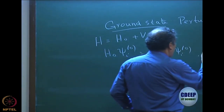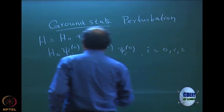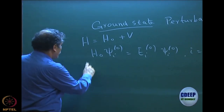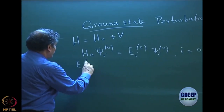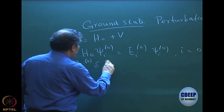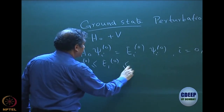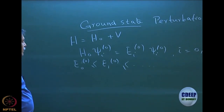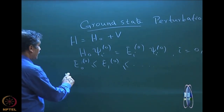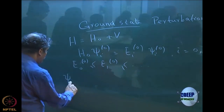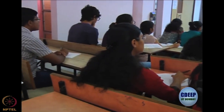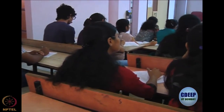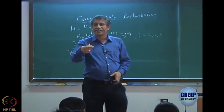So i is 0, 1, 2, 3, etc. E00 is the lowest energy, so I can write E00 less than or equal to E10, etc. This is an ordering. The correction to the ground state at first order — every time I write the superscript, remember, the superscript is the order and the subscript is the ground or excited state.